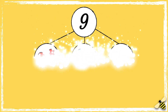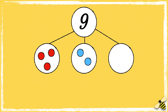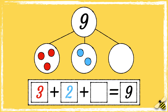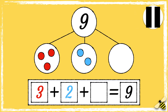Here is a part-whole model. The whole is nine. We have some of the parts but there is a missing part. Can you figure out the missing part? Pause the video to give you time to work out the answer. Press play when you're done.